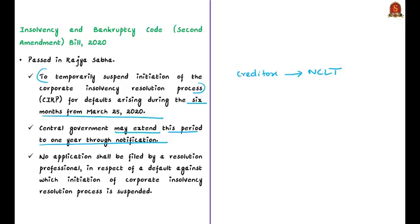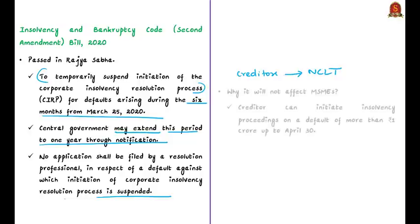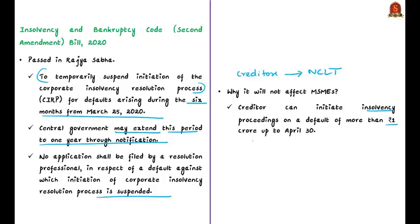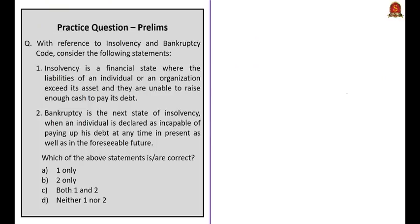The bill provides that no application shall be filed by a resolution professional in respect of a default against which initiation of the CIRP is suspended. Earlier, a creditor could initiate insolvency proceedings on a default of just more than 1 lakh rupees; this threshold was increased to 1 crore up to April 30, so proceedings will not be affecting MSMEs. The question related to this topic will be discussed in the practice questions section. With this, we'll move on to the next news.